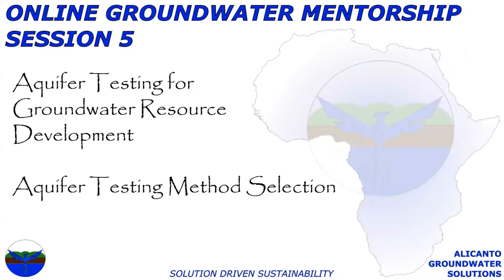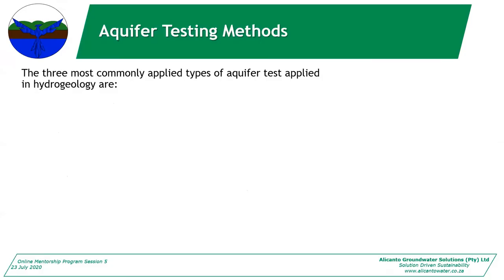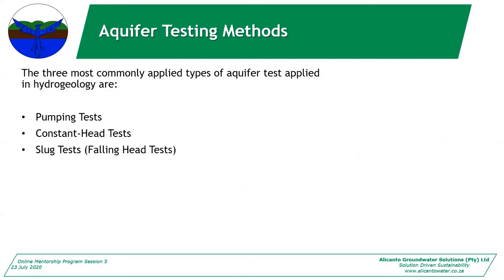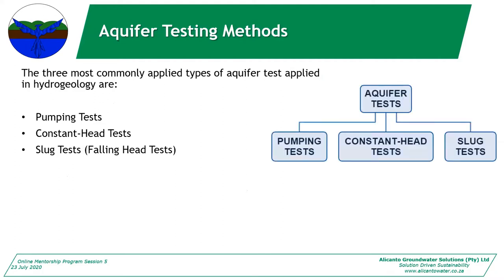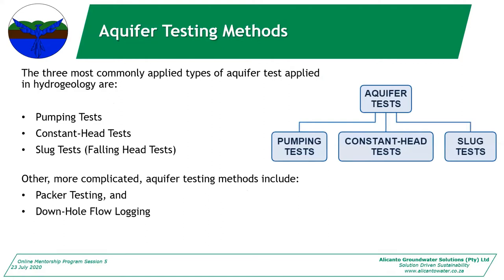The first part we'll go through with aquifer testing for groundwater resource development is selecting your aquifer test method. The most commonly applied types of aquifer test are pumping tests, constant head tests, and slug tests. There are also more complicated methods such as packer testing or tracer testing, and the relatively new one is downhole flow logging — I won't go through those in detail as they're not used that often in my experience.